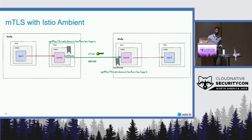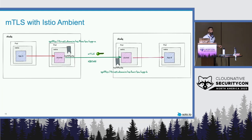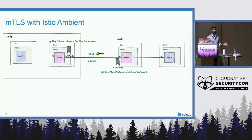There was a lot of engineering effort that went into creating a new overlay called HBone — the HTTP-based overlay network encapsulation. What this provides is a TCP over HTTP mechanism so that you can carry requests over this overlay tunnel. This occurs from Z-tunnel pod to Z-tunnel pod. We deploy a Z-tunnel pod at a daemon-set level, so if your Kubernetes cluster has 10 nodes, each one of those nodes gets a Z-tunnel pod, and each Z-tunnel pod tunnels to each other when there is traffic going over that wire.